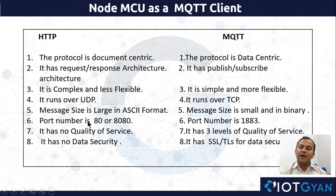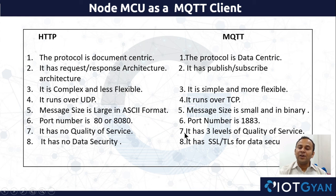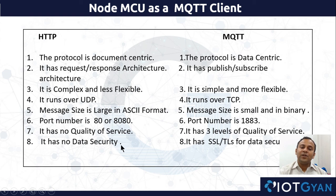HTTP runs on port number 80 or 8080, but MQTT runs on TCP port number 1883. In HTTP there is no inbuilt QoS, but in MQTT at the application level the user has a choice of QoS — whether QoS 0, QoS 1, or QoS 2. These three quality of service levels are available in MQTT. In HTTP there is no end-to-end data security, but MQTT has SSL or TLS built in for data security. So from a security point of view, MQTT is much better than HTTP.